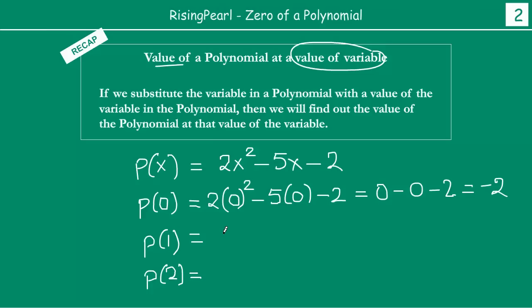So at x equal to 0, jo P(0) hai, we find that out by replacing x is equal to 0 in the polynomial. So aap x ke jagah aap you will put 0. So 2x square, 2, 0 square minus 5, x ke jagah 0, minus 2. So aap ye se solve karna se you will notice 0 square is 0 times 2 is 0 minus 5 zeros is 0 minus 2. So ye ho gayi 0 minus 0, so basically you will get minus 2.